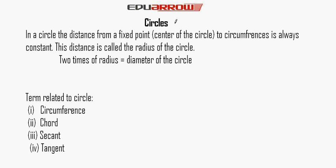Now we take the new chapter: circle. In a circle, the distance from a fixed point to the circumference is always constant. The distance is called the radius of the circle.